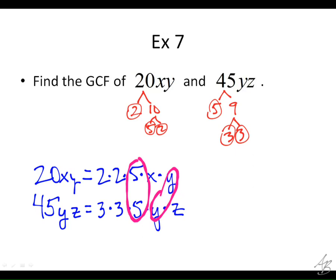So now our GCF — we multiply everything they have in common together. If we multiply 5 times Y, we get 5Y.